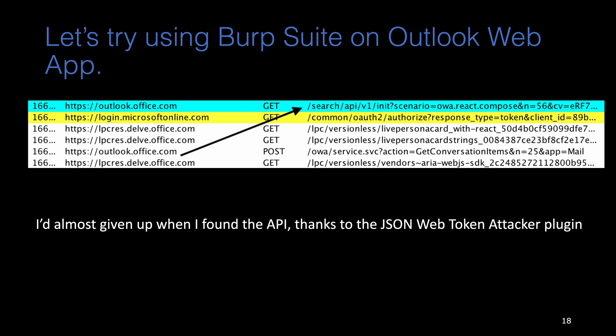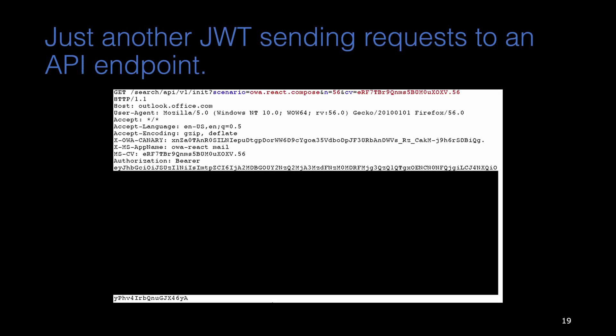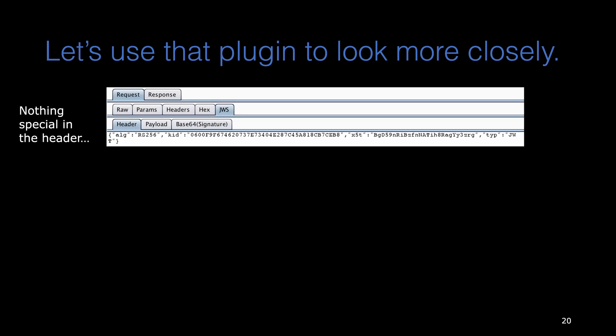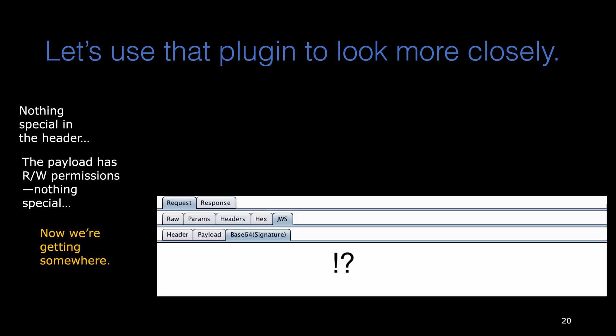I later found that they are highlighted because of the plugin I used — JSON Web Token Attackers. The plugin would highlight anything that either has a JWT in the request or in the response. So I casually navigated to the plugins tab and clicked around. The auth header looks fine, the payload looks fine as well, and the signature looks empty. A JWT without a signature is the worst JWT for web applications.